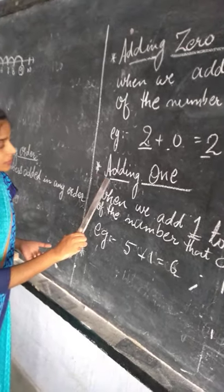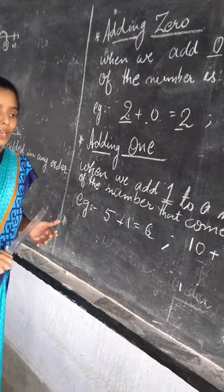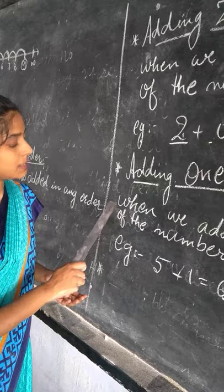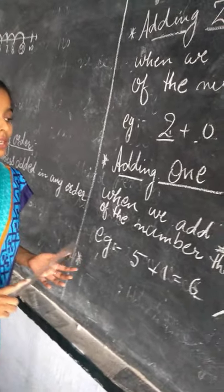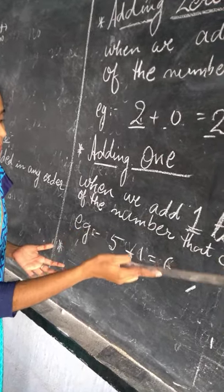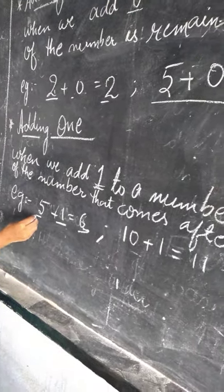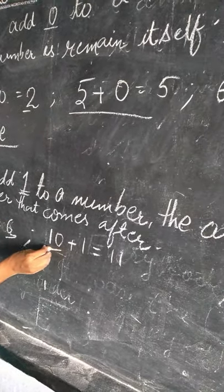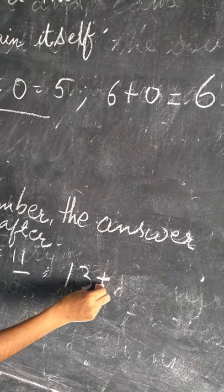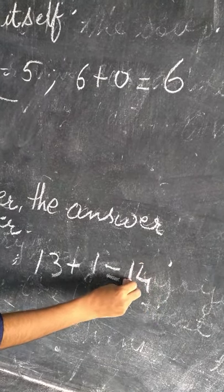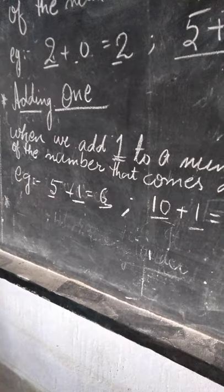Next, adding one. When we add one to a number, the answer is the number that comes after it. For example: five plus one equals to six — because six comes after five. Ten plus one equals to eleven. Thirteen plus one equals to fourteen. When we add one to any number, we get the next number after it.